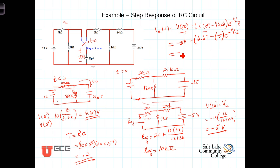Cleaning that up a little bit that gives us negative 5, dropping the units there, negative 5 plus 11.67 e to the minus t divided by 0.2.